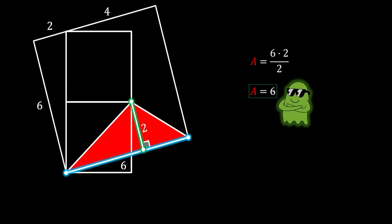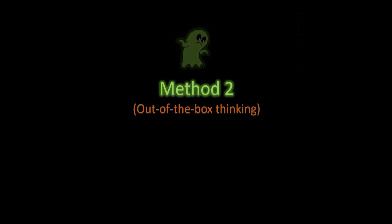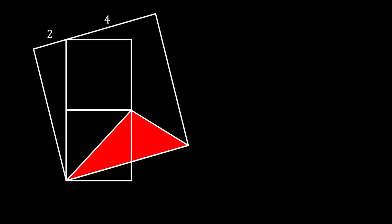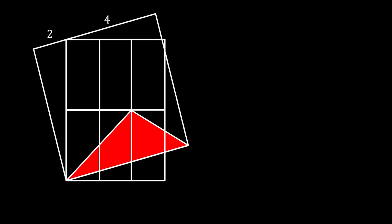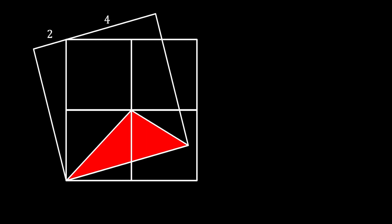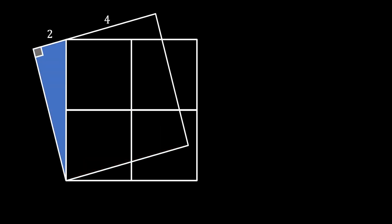Now for method two, which uses some out-of-the-box thinking. We copy the two smaller squares and align the copy to the right to form one big square. Looking again at the shaded right triangle on the left, we notice that its remaining leg equals the side of the tilted square, which is 6.